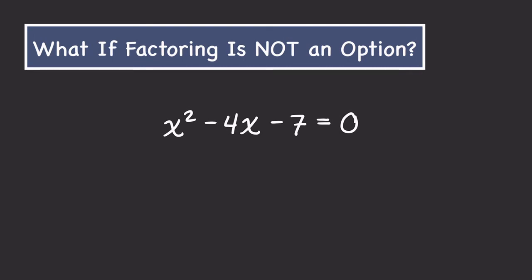But what about a scenario where factoring just doesn't seem like an option? Here we have x² - 4x - 7 = 0. Since 7 is prime, its only factors are 7 and 1, and we can't combine 7 and 1 through addition or subtraction to get -4x. So we're not going to be able to factor like we normally would. We could use the quadratic formula, which will be a video for another day. But what if we could turn the left side into a perfect square and then take the square root of both sides?